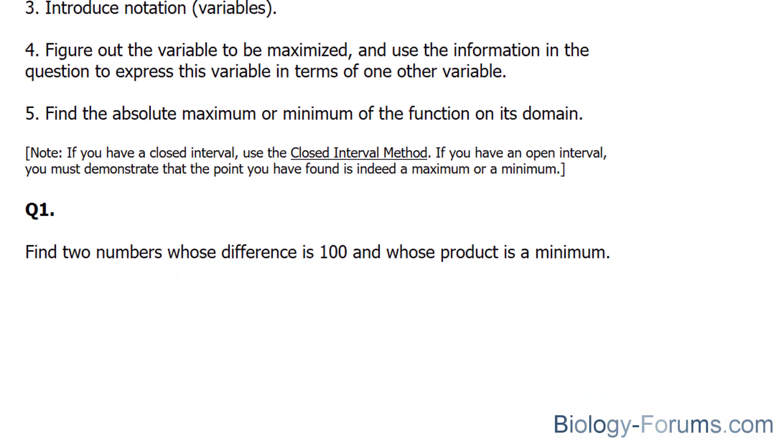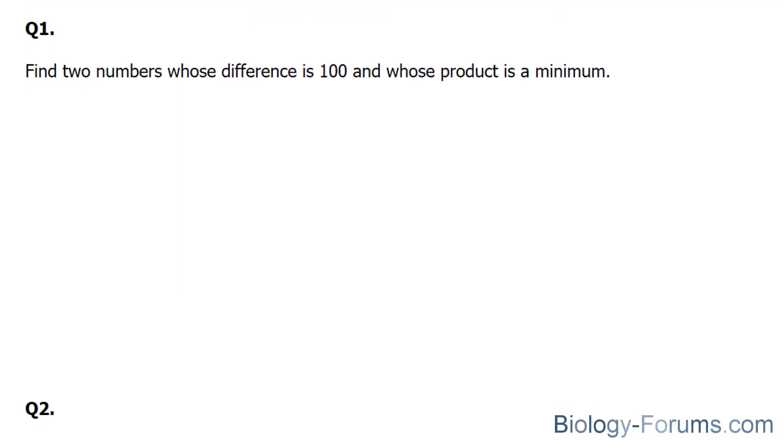Let's start with question number one. In this question, they are asking us to find two numbers whose difference is 100 and whose product is a minimum. So let's introduce these two numbers. Let's set x as our first number and y as our second number.